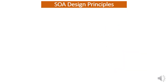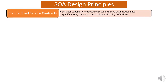Now I will talk one by one about all of the eight design principles associated with service-oriented architecture. The first design principle is standardization of service contracts. This design principle states that we should be exposing service capabilities and functionalities with well-defined data formats, data models, data specifications, and any associated transport mechanisms and policies, which should be well defined using standardized service contracts.